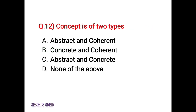Question 12: Concept is of two types. Options are: Option A: Abstract and Coherent, Option B: Concrete and Coherent, Option C: Abstract and Concrete, Option D: None of the above. The correct answer is Option C, Abstract and Concrete. Concept is of two types: Abstract and Concrete.